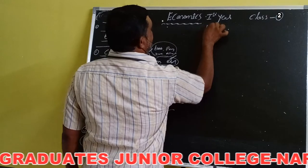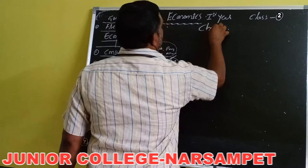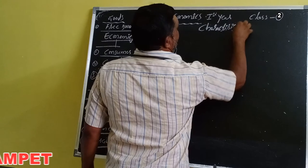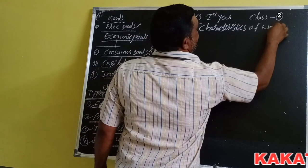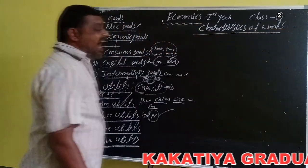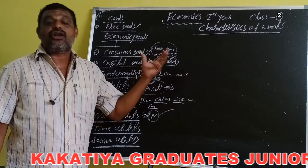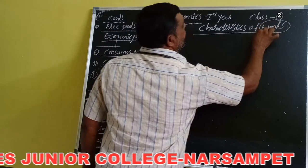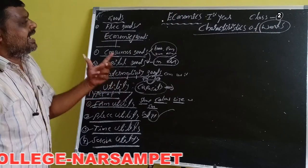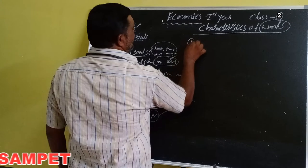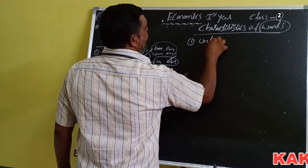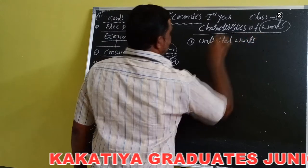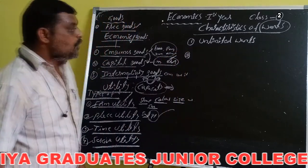Now finally, today we are discussing the characteristics of wants. Human wants are the basis of his economic activities. The main characteristics of wants — first of all, unlimited wants. Human wants are unlimited.